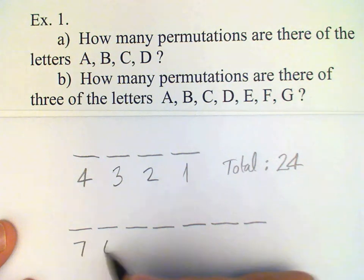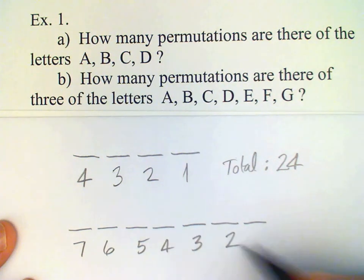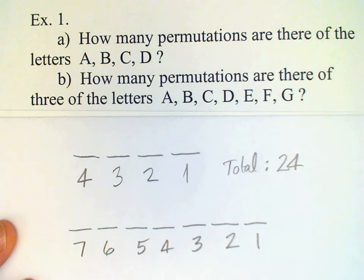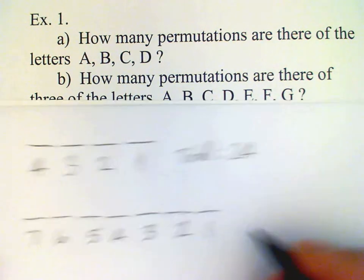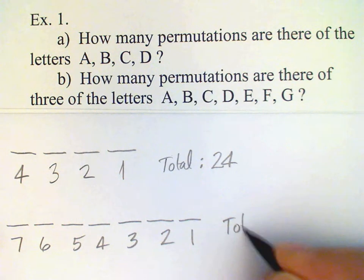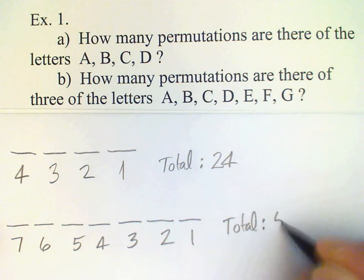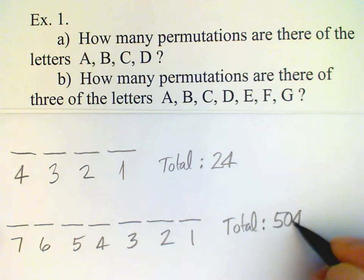And so seven, six, five, four, three, two, one. Multiply all these numbers together and we get total which is 5040.